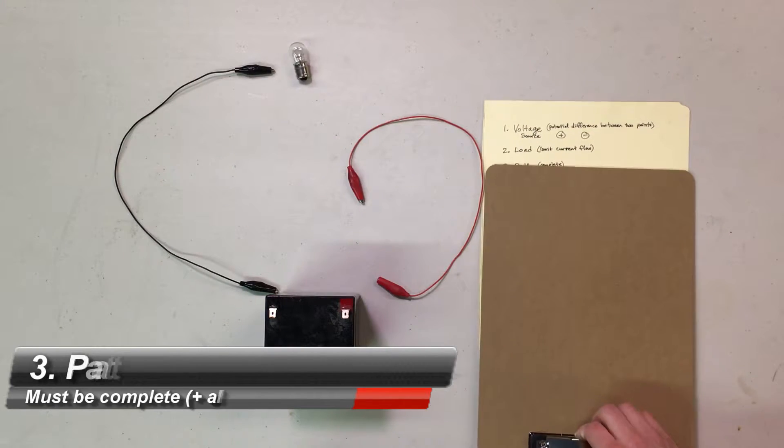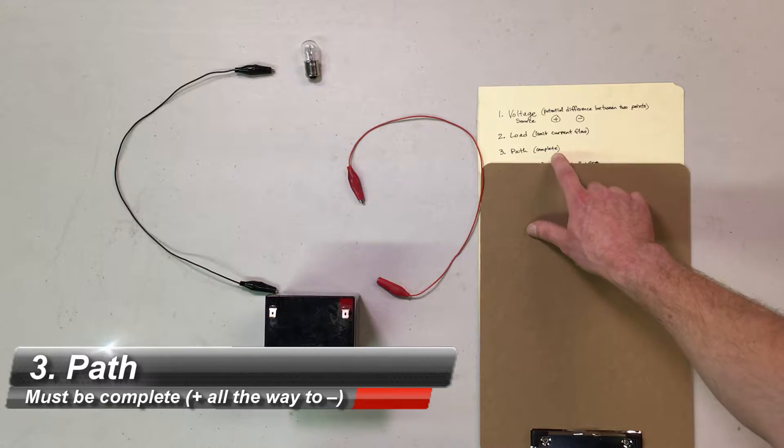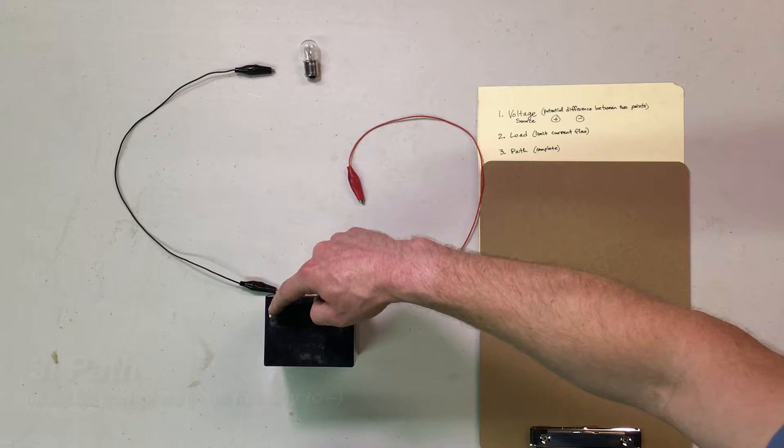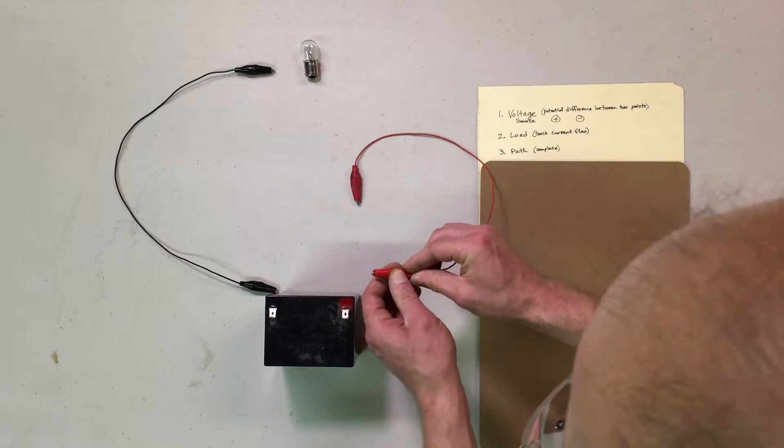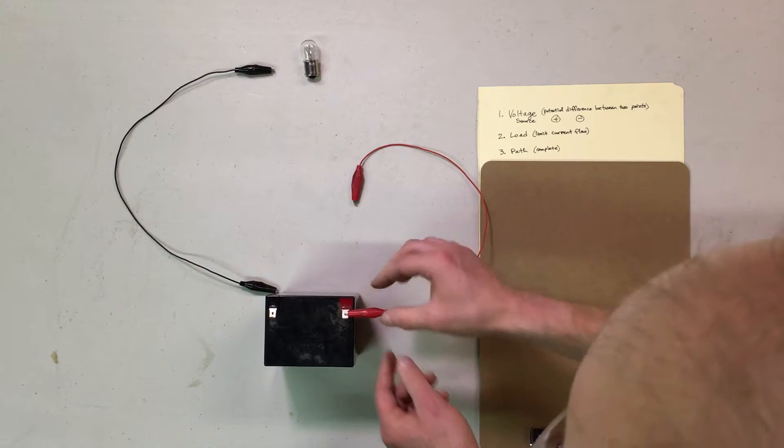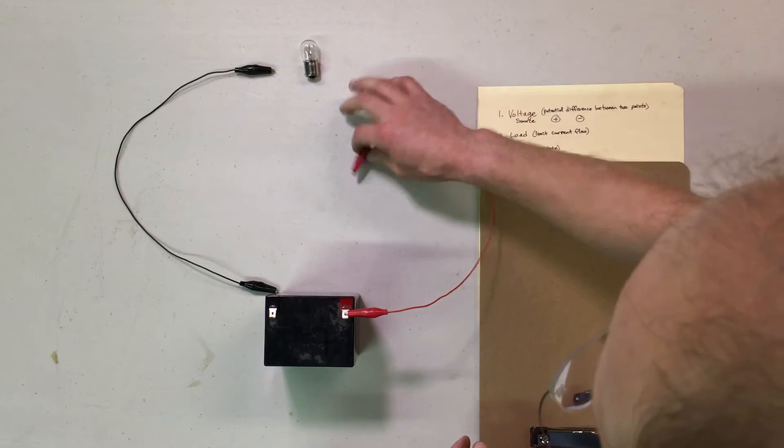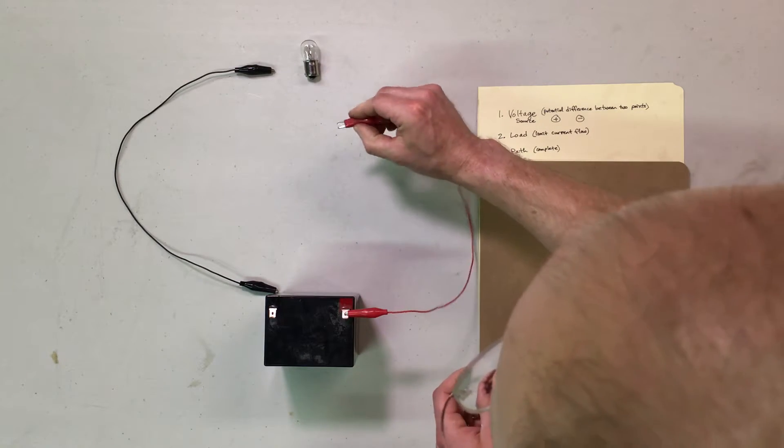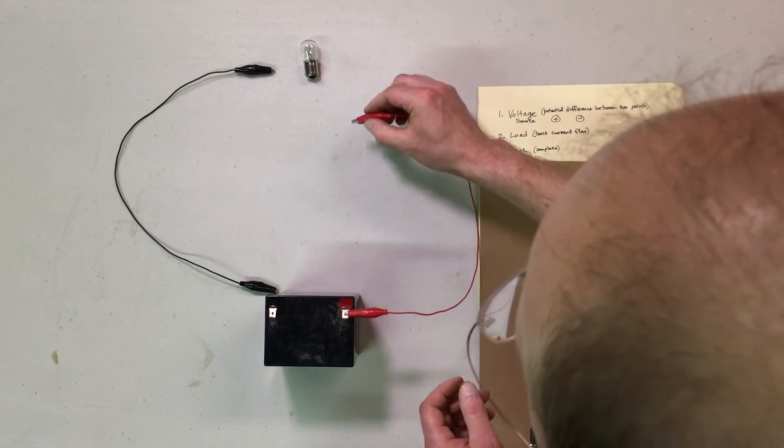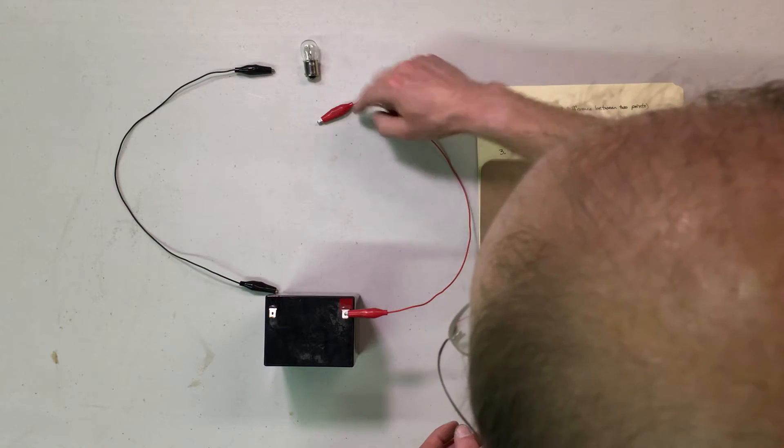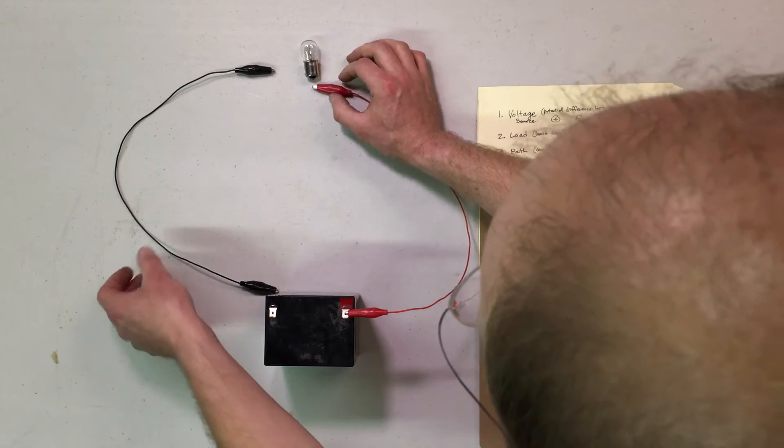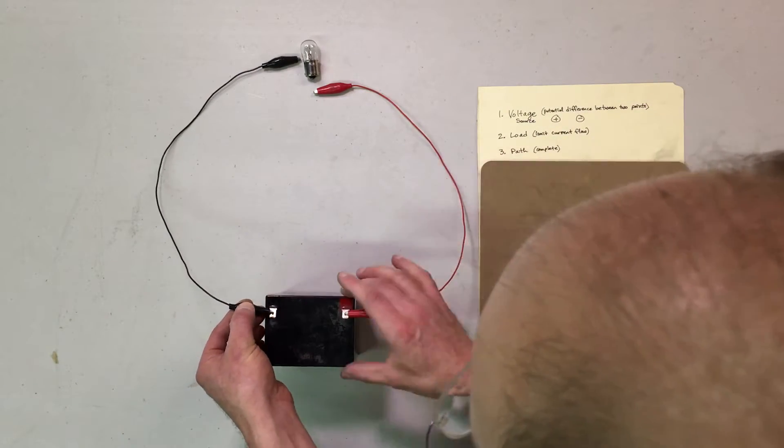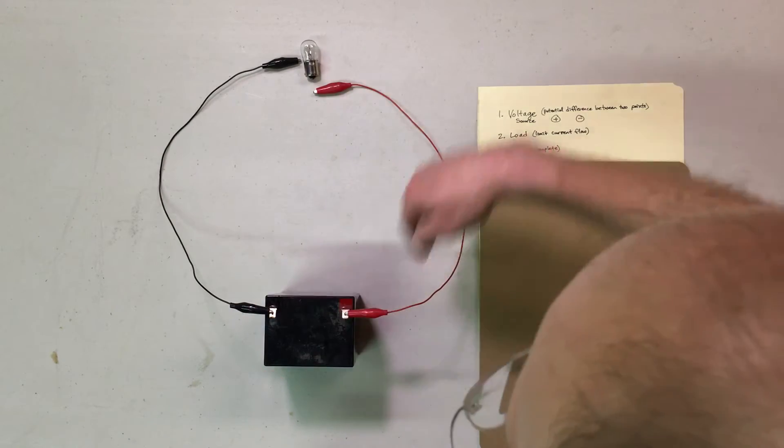Then you need a path as the next item, and the path needs to be complete. So it needs to go from the positive through the load back to the negative. So to make that, I could make a simple circuit by connecting a wire. This is a conductive path. It's copper wire connected to little metal test alligator clip leads. I'm going to go positive from the battery to the bottom of the light bulb here, and then from the body section of the light bulb there back to the negative terminal of the battery. Once I connect those two points, this will be a complete circuit.